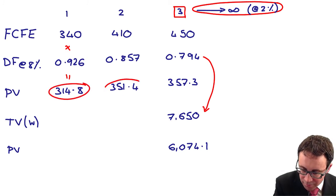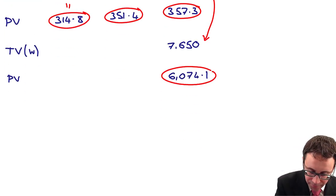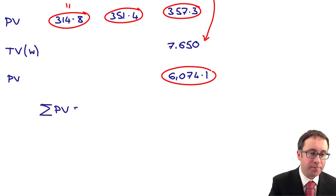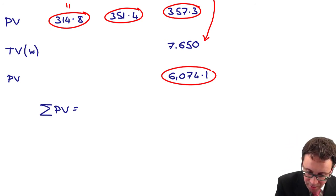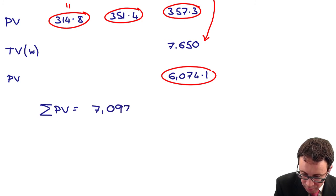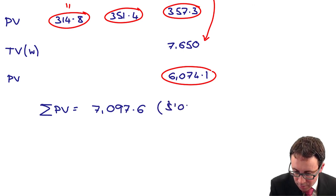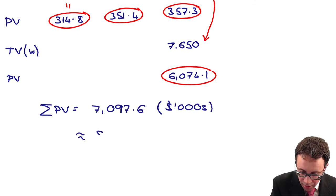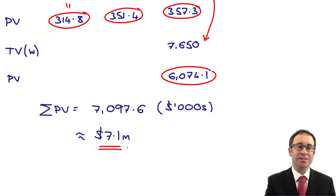Then to work out the total present value, we need to add all of those together. The total present value, which is the value of Omega's equity: 6074.1 plus 314.8 plus 351.4 plus 357.3. Gives me 7097.6. Again, in the question, that was there in thousands of dollars. So to you or I, that is 7.1 million dollars. There we go. That's the total equity value. To work out the value per share, you need to be given the number of shares in issue, which we aren't in this instance. That could be a further complication within the question.